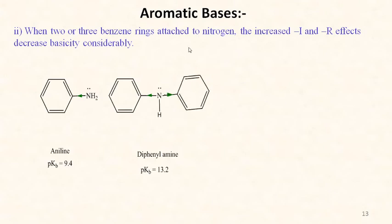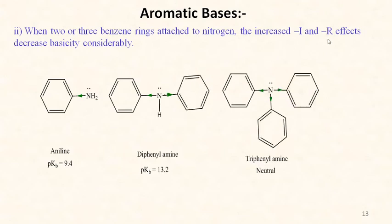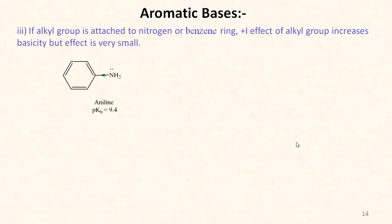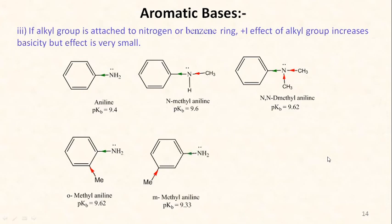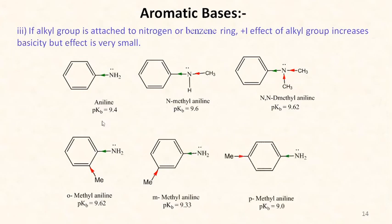When two or three benzene rings are attached to nitrogen, the electron-withdrawing inductive and resonance effects increase, so basicity decreases considerably. Aniline has pKb 9.4, diphenylamine has 13.2, while triphenylamine is neutral. If alkyl groups are attached to nitrogen or the benzene ring, the +I effect increases basicity slightly. Observed pKb values: aniline 9.4, N-methyl aniline 9.6, N,N-dimethyl aniline 9.62, ortho-methyl aniline 9.62, meta-methyl aniline 9.33, para-methyl aniline 9.0.